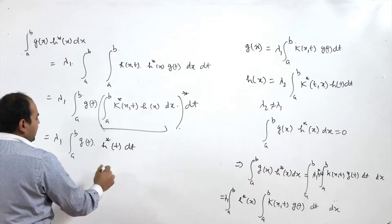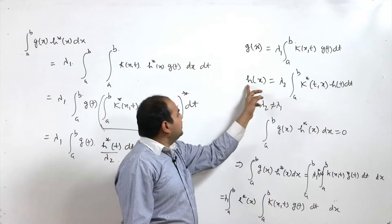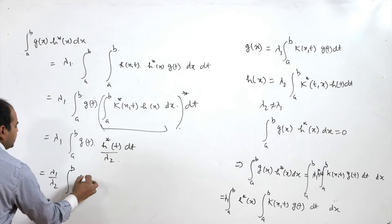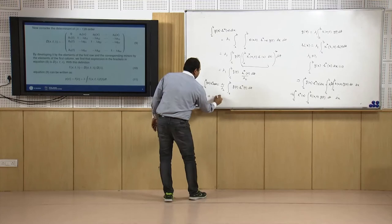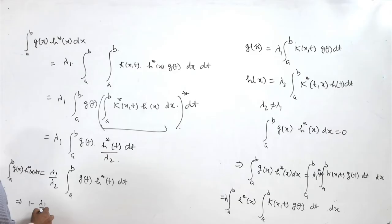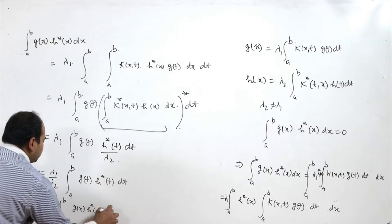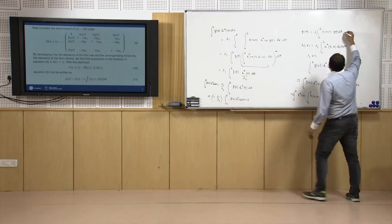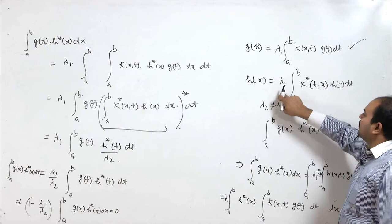Since t is just a dummy variable, we can replace it by x, giving (λ₁/λ₂)∫[a to b] g(x) h*(x) dx. So the original equation becomes (1 − λ₁/λ₂) ∫[a to b] g(x) h*(x) dx = 0. Since λ₁ ≠ λ₂, this implies g(x) is orthogonal to h*(x). Hence, eigenfunctions corresponding to eigenvalue λ₁ of the given equation and eigenfunctions corresponding to a distinct eigenvalue λ₂ of the transpose equation are orthogonal to each other.